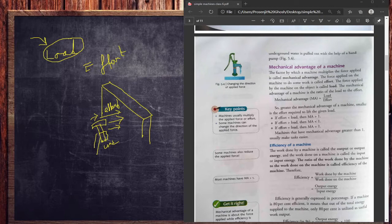So we already learned about effort and load. Now the ratio of them will tell you how good the machine is, and that is known as mechanical advantage - that ratio of load over the effort.